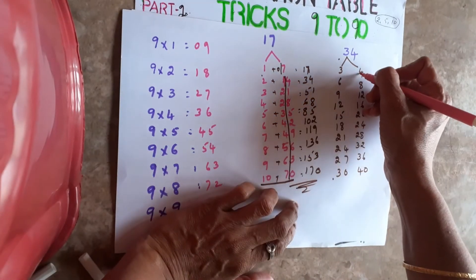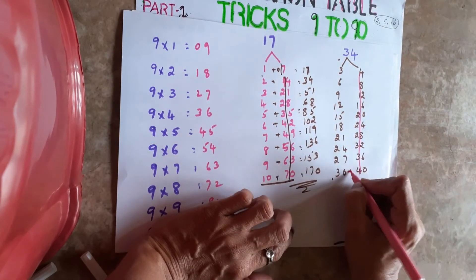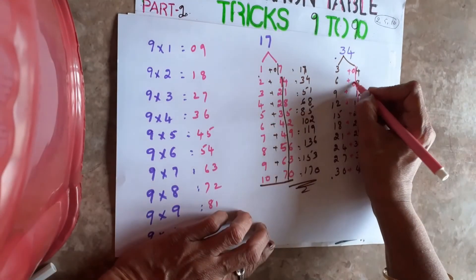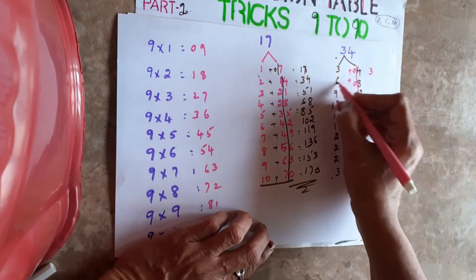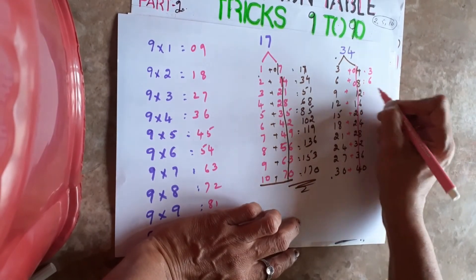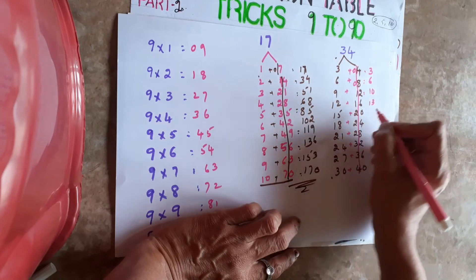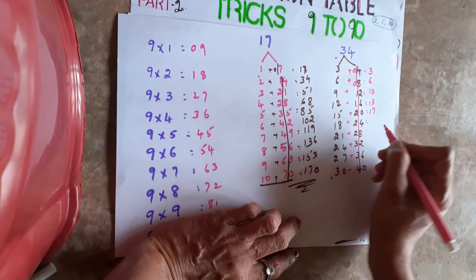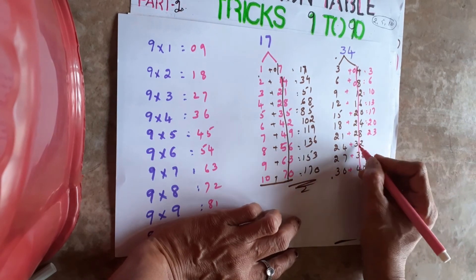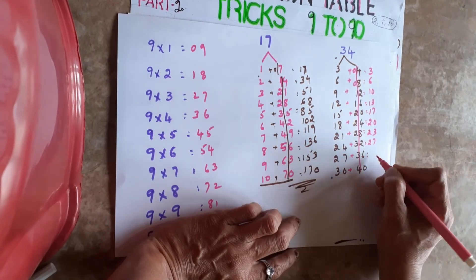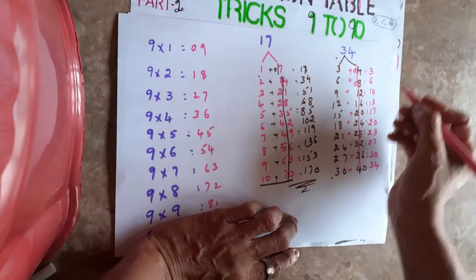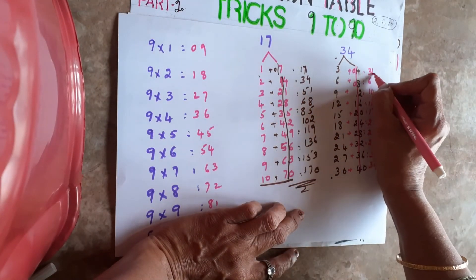Now take whatever is in the tens place of the 4-table and add it to the 3-table values. If nothing is there, it means 0. So: 3+0=3, 6+0=6, 9+1=10, 12+1=13, 15+2=17, 18+2=20, 21+2=23, 24+3=27, 27+3=30, 30+4=34. Then take the units place values of the 4-table and write them next to each result to get your answer.